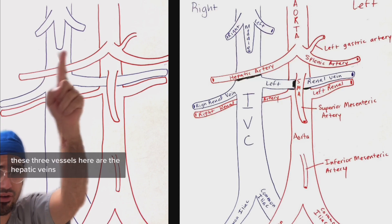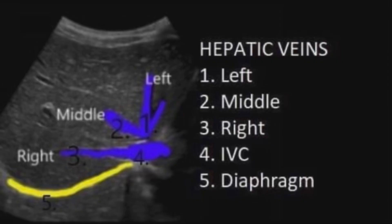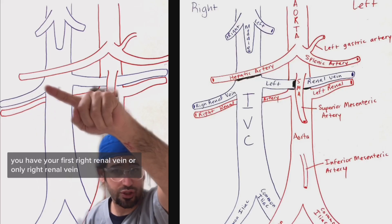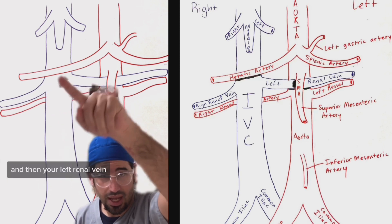These three vessels here are the hepatic veins. There's usually three, some variations there could be four, that drains the liver. Going down the IVC you have your first right renal vein, or only right renal vein, and then your left renal vein.